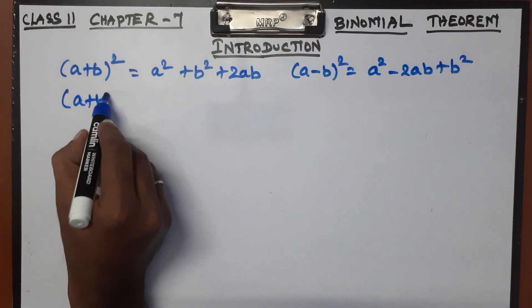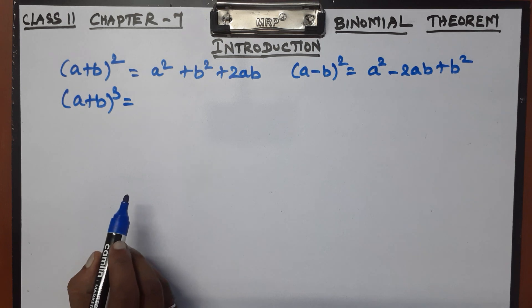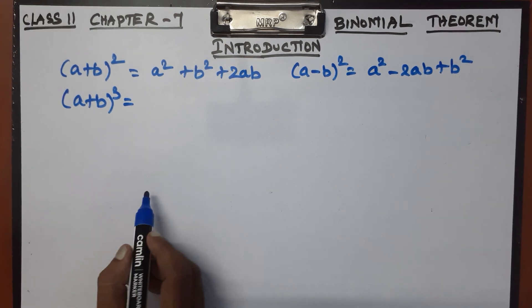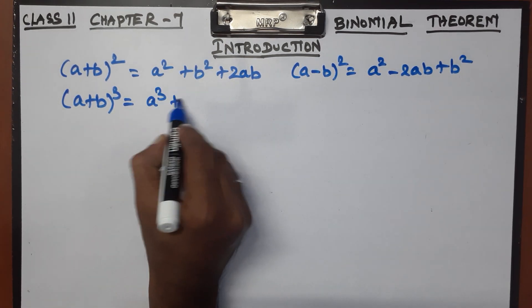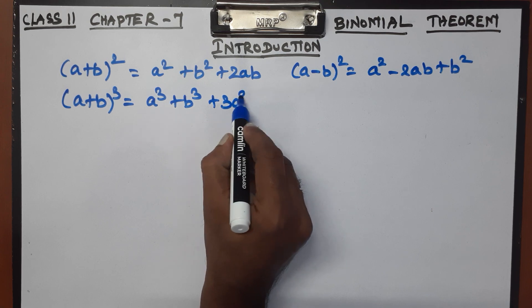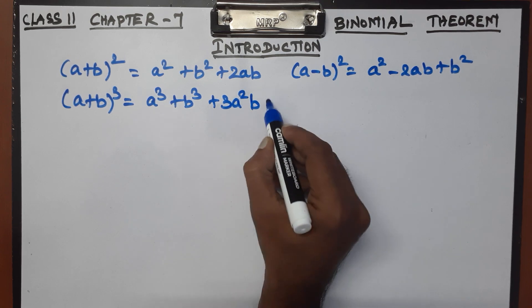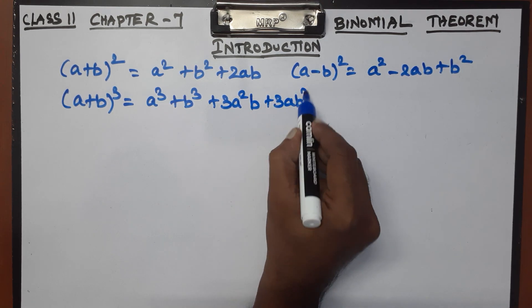Next, let's look at (a + b) whole cube. The expansion is: a cubed plus b cubed plus 3a squared b plus 3ab squared.